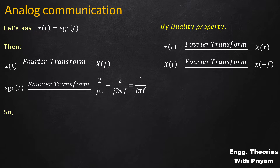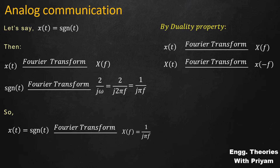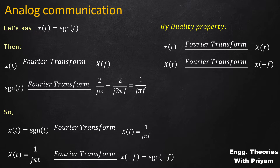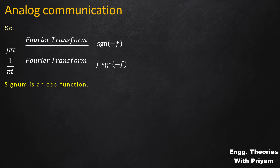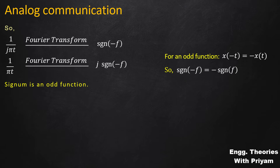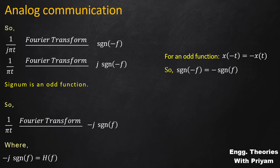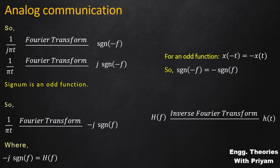So 1/(jπt) has Fourier transform sgn(−f), which means 1/(πt) has Fourier transform j·sgn(−f). Since the signum function is odd, sgn(−f) = −sgn(f). Therefore 1/(πt) has Fourier transform −j·sgn(f). Setting this equal to H(f), we confirm that the inverse Fourier transform of H(f) is h(t) = 1/(πt), verifying the impulse response of the Hilbert transformer.